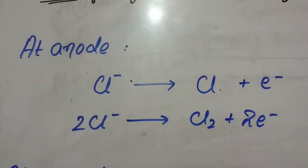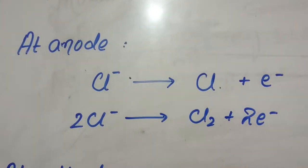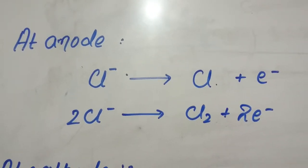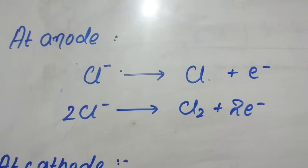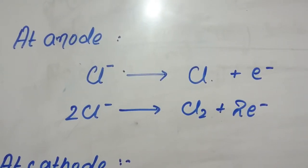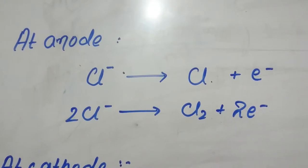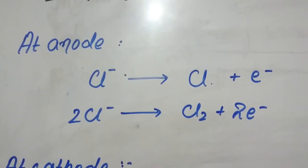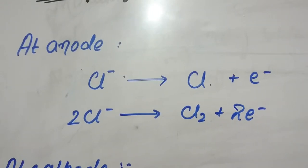When electric current gets started at anode there is a reaction in which the chloride negative ions are oxidized so that they lose their electron to form chlorine molecule. As we know that chlorine occurs as diatomic molecule, so we balance the equation having diatomic chlorine molecule.